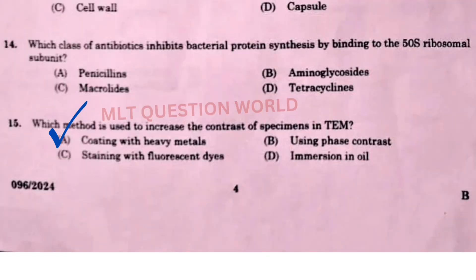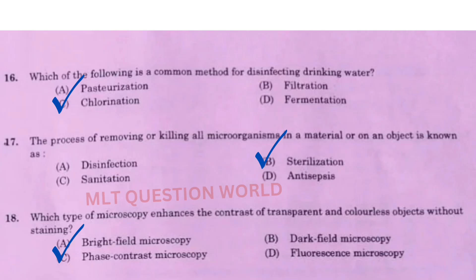Next question: Which method is used to increase the contrast of the specimen in TEM, that is transmission electron microscopy? The right answer is option A, coating with heavy metals. Next question: Which of the following is a common method for disinfecting drinking water? The right answer is option C, chlorination.